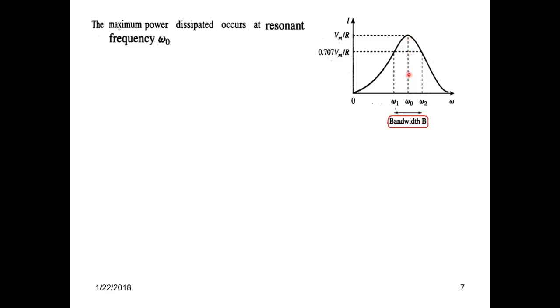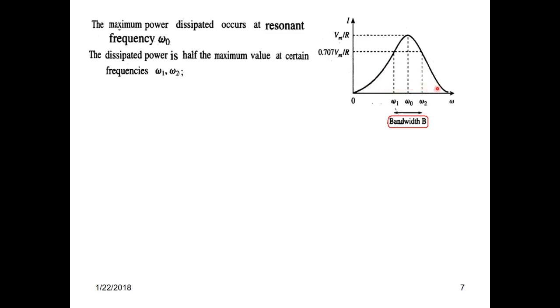We should expect the maximum power dissipation at the peak. To define the bandwidth of a circuit, there was confusion about where to start. A point was agreed upon: we take the half-power point. The frequency at the half-power point gives us the two extreme frequencies, and the difference between them is the bandwidth of the circuit.